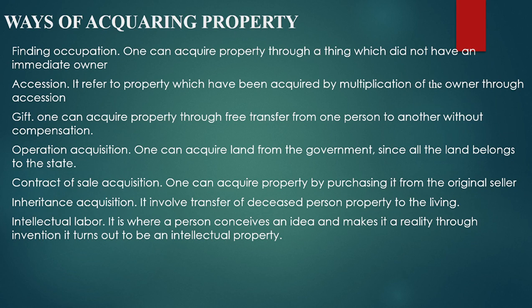Contract of sale acquisition is the major way of acquiring property. For instance, you acquire property by purchasing it from the original seller. If you go to a car dealer and purchase a car, the car is transferred to your own title through the offering of the logbook — you have acquired that property through contract of sale acquisition.